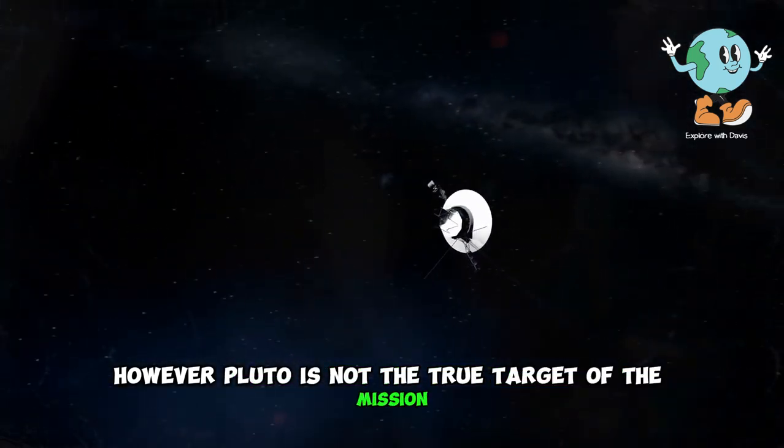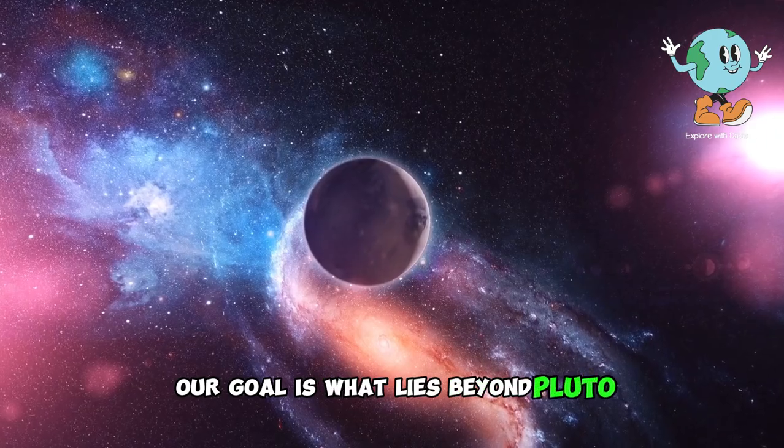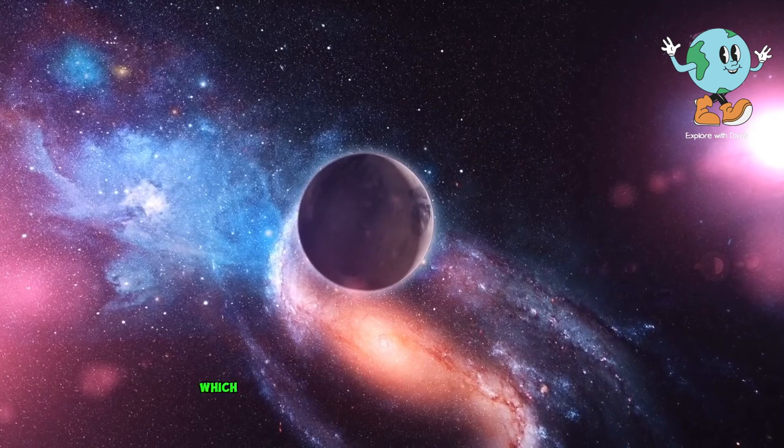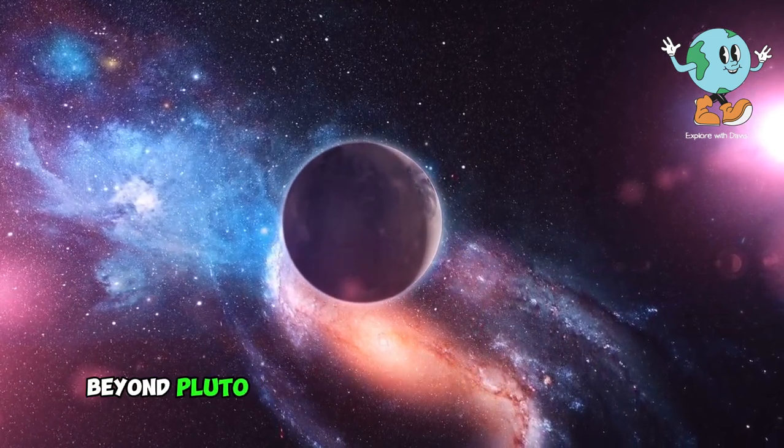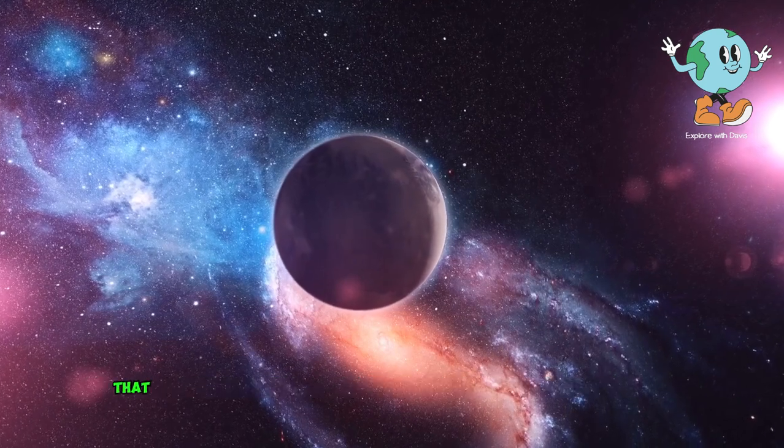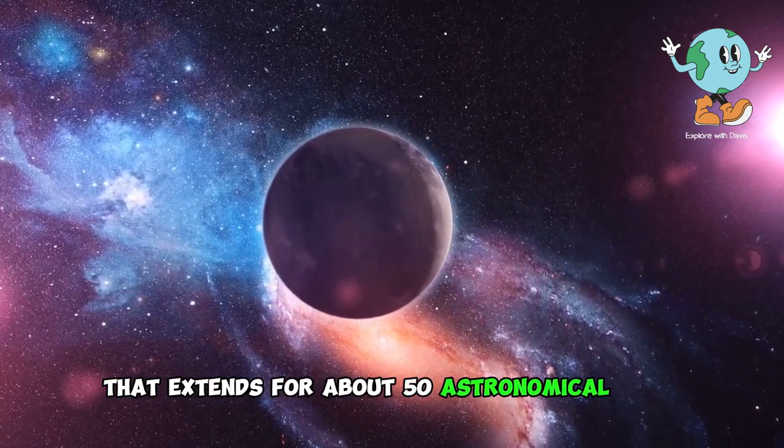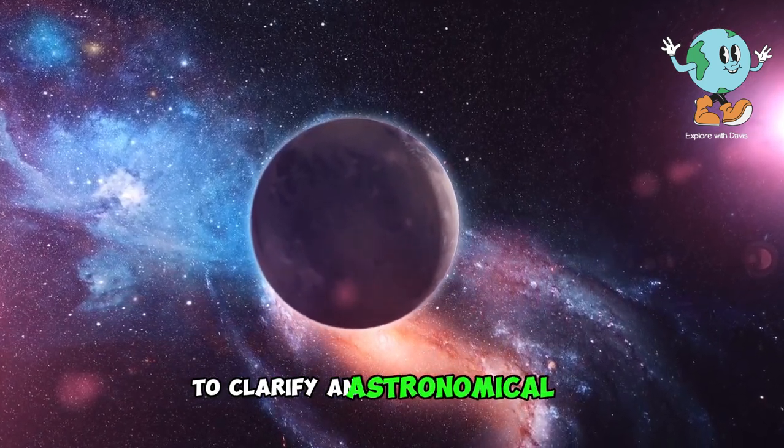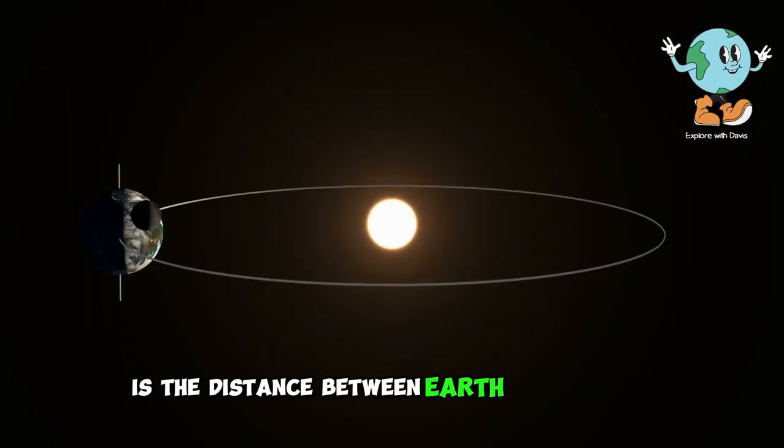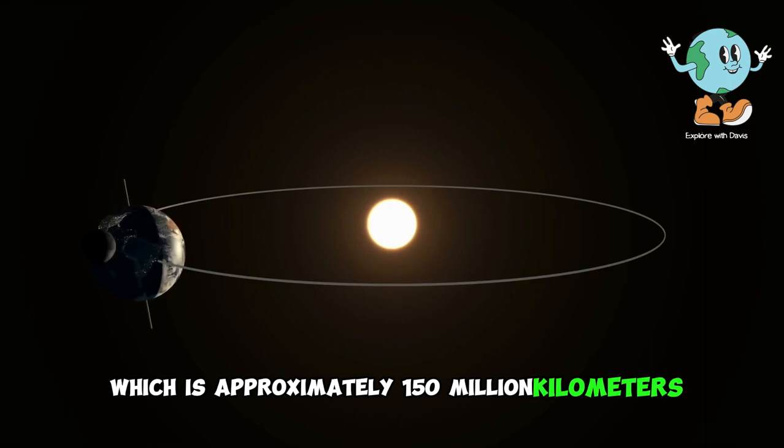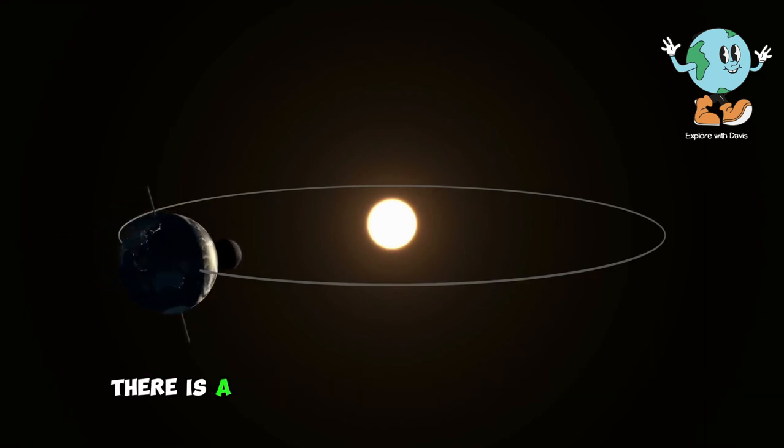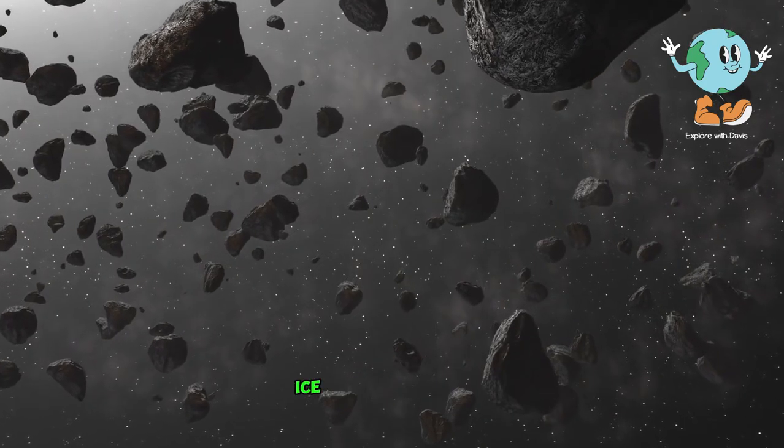However, Pluto is not the true target of the mission. Our goal is what lies beyond Pluto, specifically the Kuiper Belt, which is a vast celestial kingdom of asteroids and icy bodies. Beyond Pluto lies a vast and awe-inspiring world that extends for about 50 astronomical units. To clarify, an astronomical unit is the distance between Earth and the Sun, which is approximately 150 million kilometers. Within this vast world, there is a significant amount of rocky debris, ice, and ammonia.